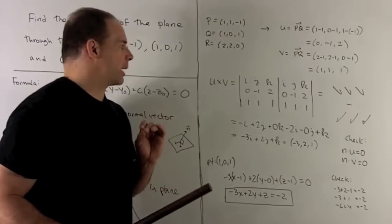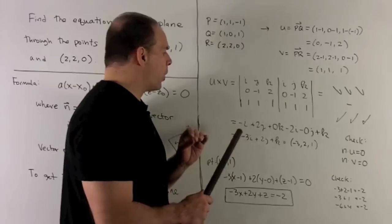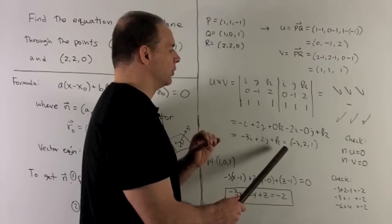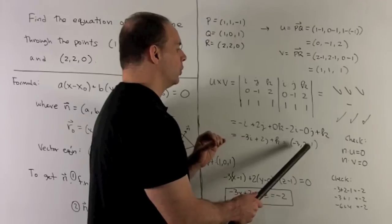So what happens in our special case? Well, I'm going to wind up getting -3I + 2J + K equal to (-3, 2, 1).